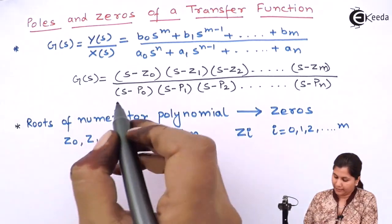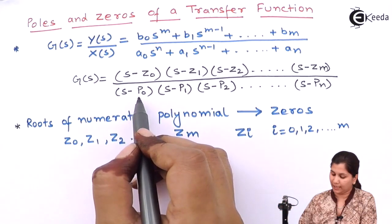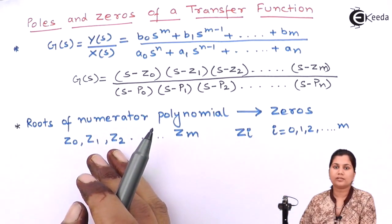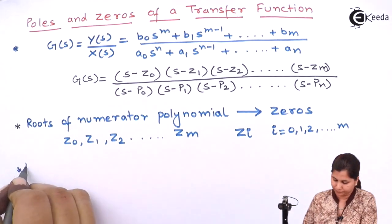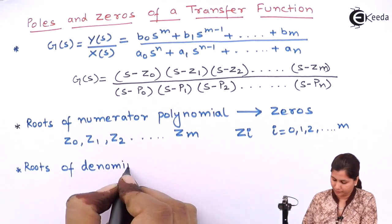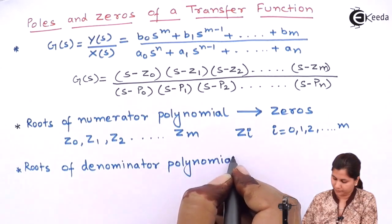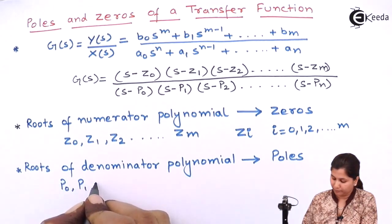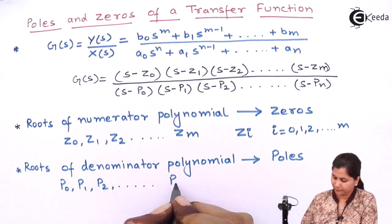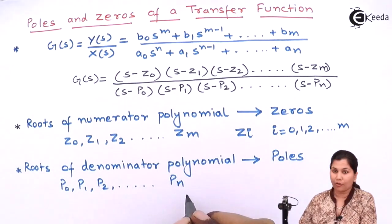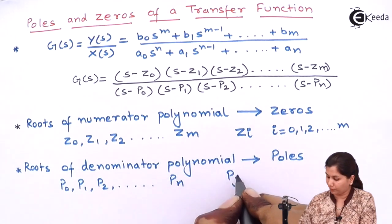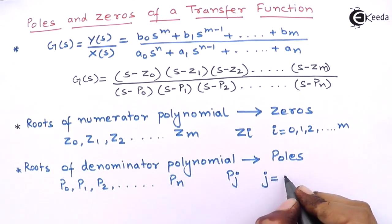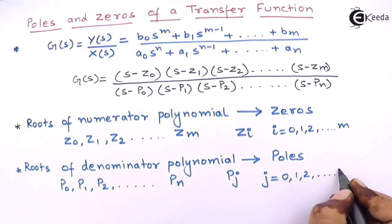The roots of the denominator polynomial — that is P0, P1, P2 and Pn — are all called the poles of the transfer function. P0, P1 till Pn are all the poles. In general form, Pj are the poles of the transfer function, where j ranges from 0, 1, 2 till N.